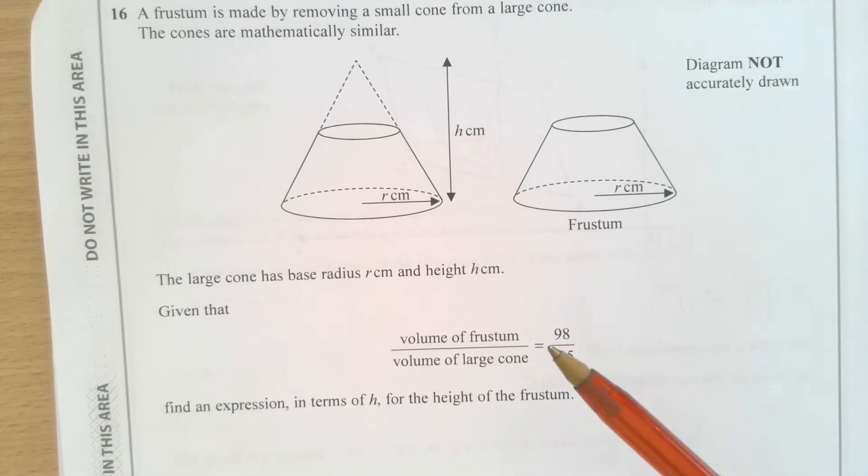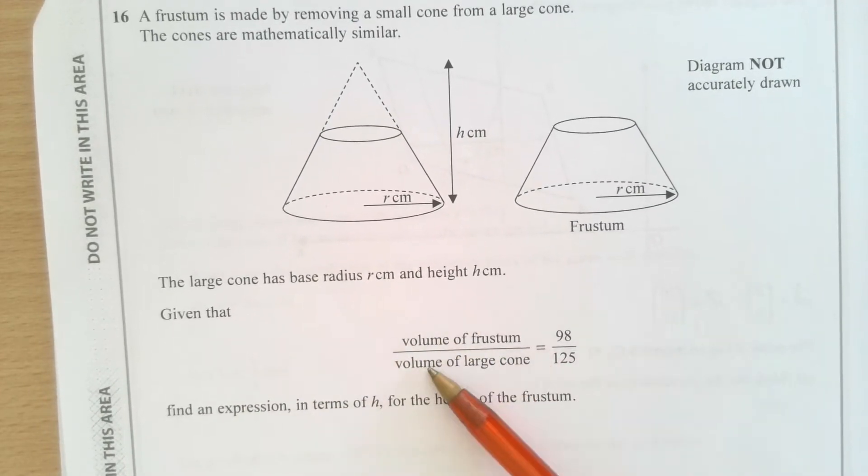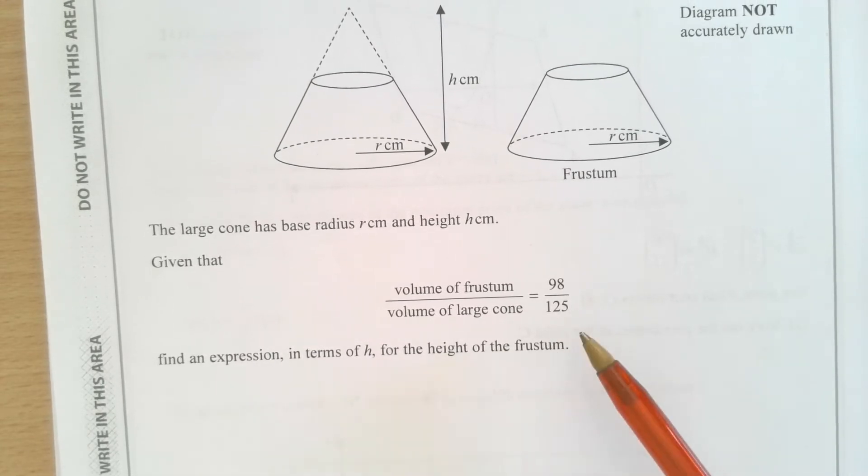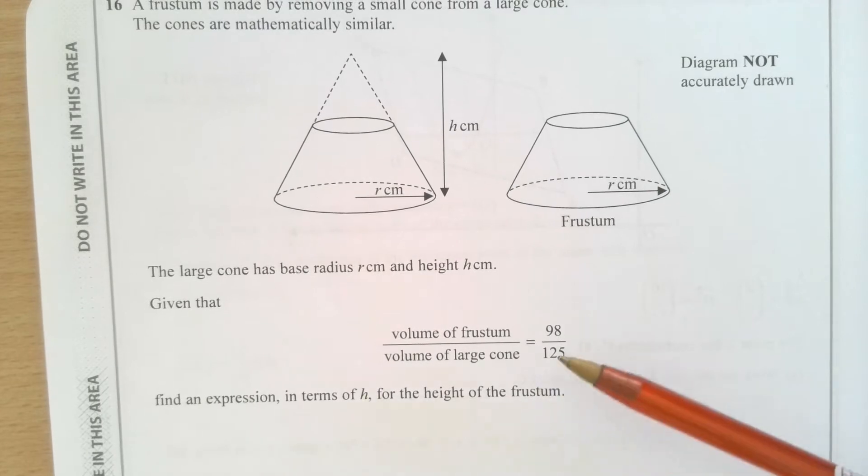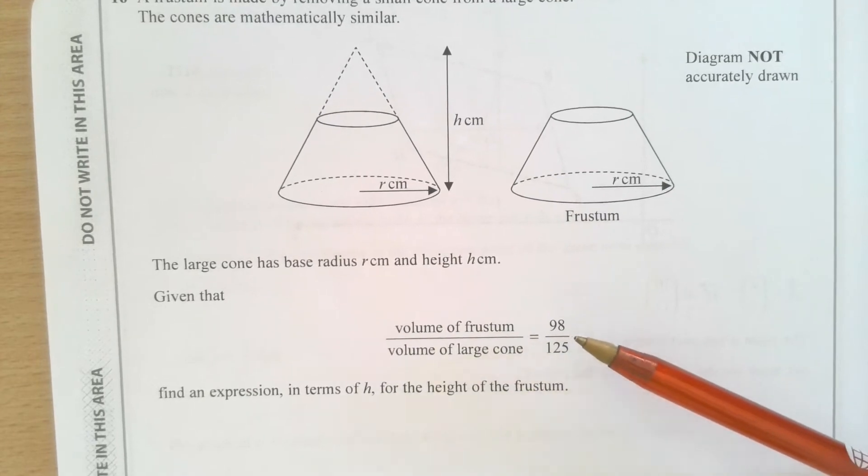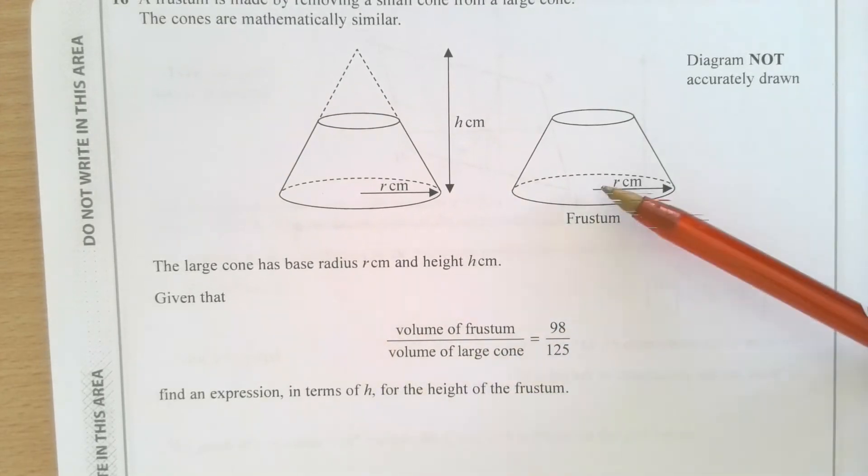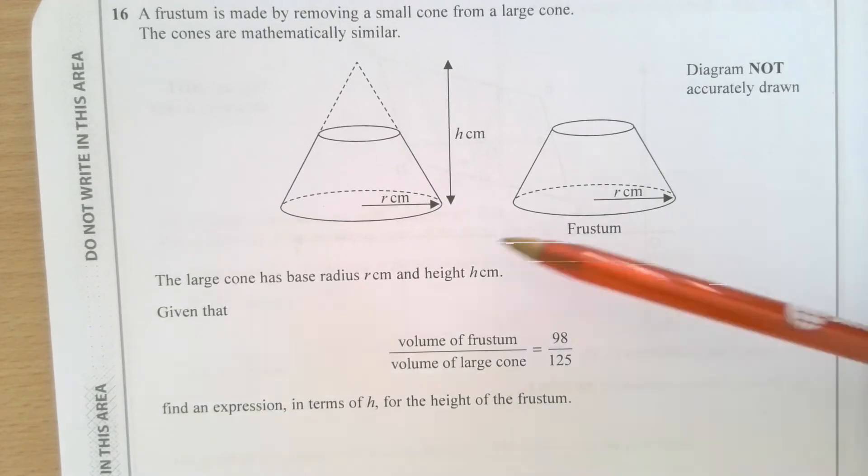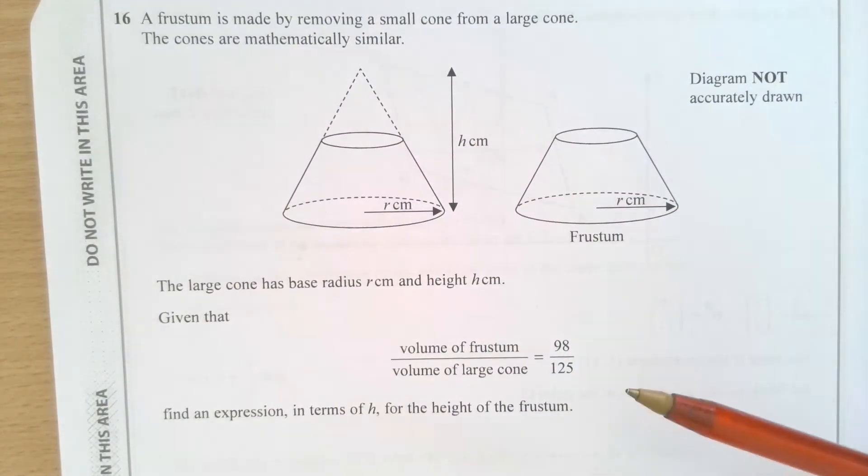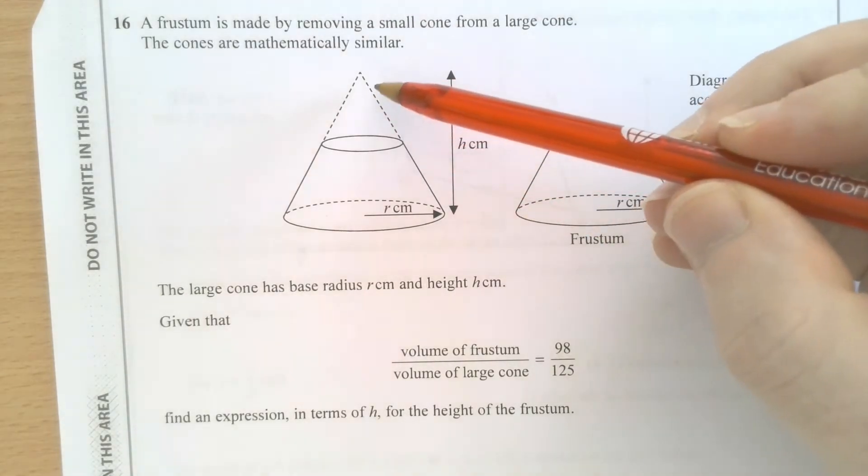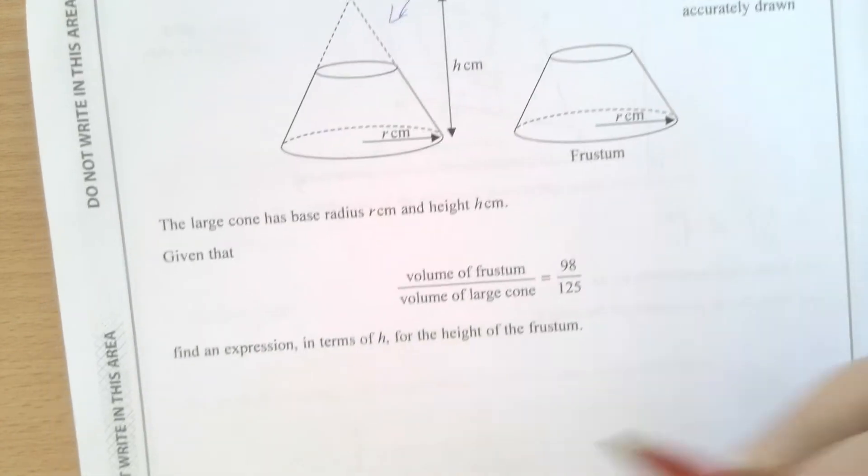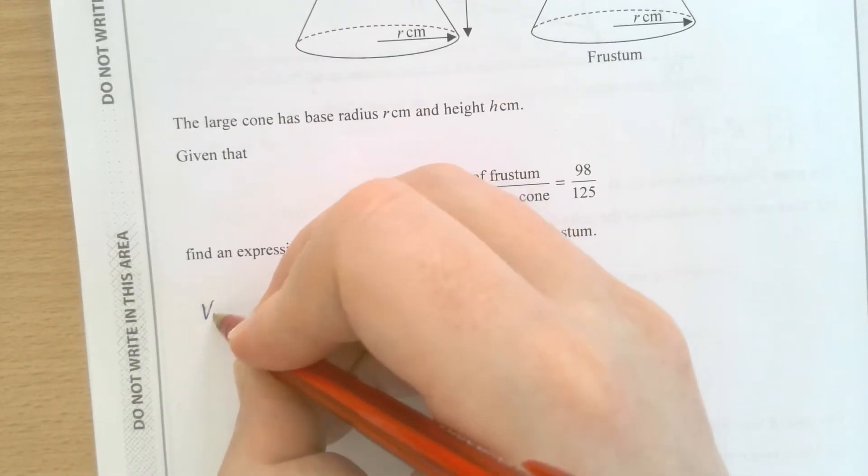Okay, so we're talking about volumes and we're asked to find a height. So this is clearly a question about scale factors. We have a number representing, relatively speaking, the volume of the frustum. And we have a volume representing the volume of the large cone. I'm tempted to come up with a similar number for the volume of the smaller cone up here. What would that be? Let's quickly work that out.